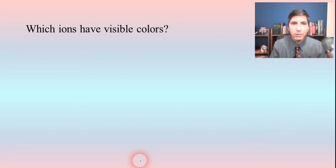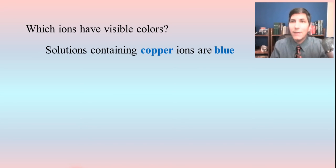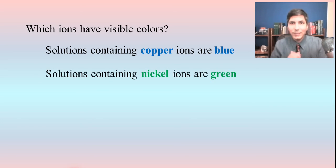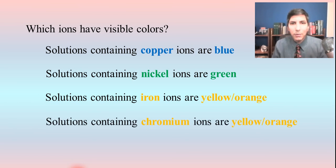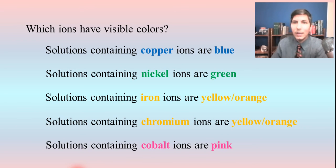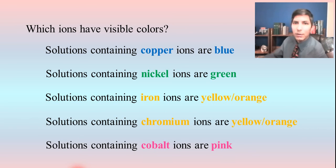Which ions have visible colors? On the AP Chemistry exam, they expect you to know a few of the most common ones. Copper ions tend to be blue. Nickel ions tend to be green — a very beautiful green color. Iron ions tend to be yellow or orange, depending on the concentration, and chromium ions are similar — yellow or orange. Cobalt ions tend to have a pink color, and if very concentrated it can look almost red. These are some common colors you need to be aware of for the AP Chemistry exam.